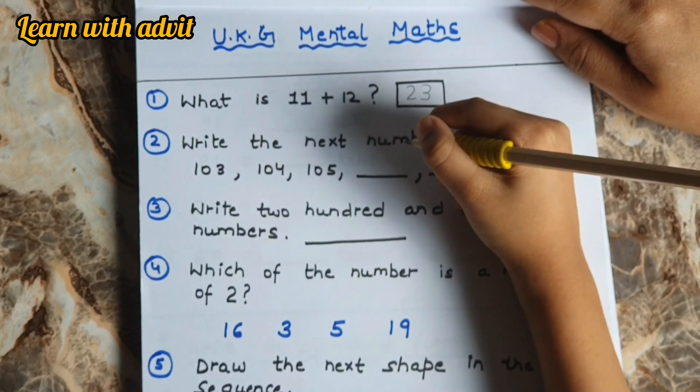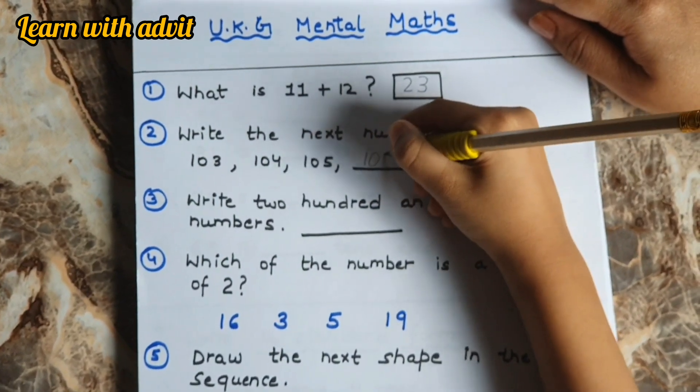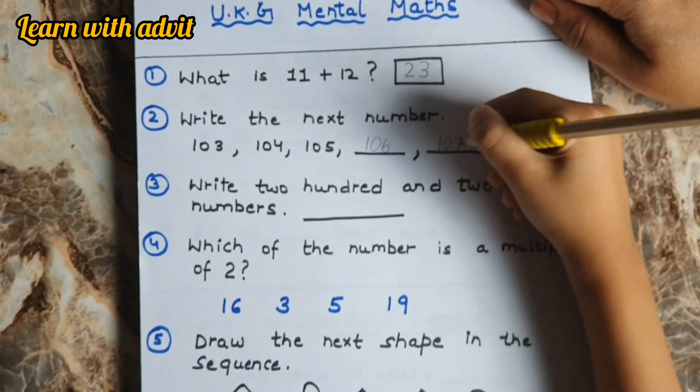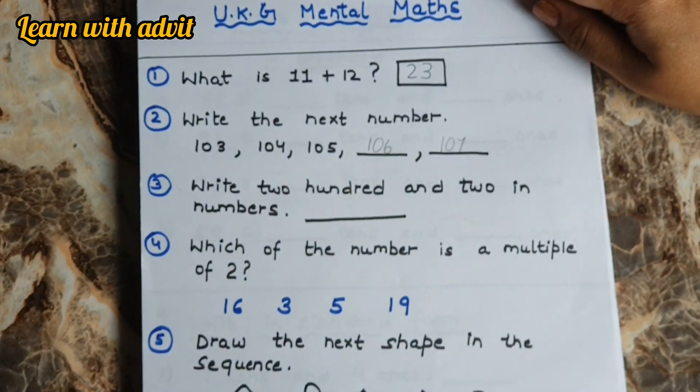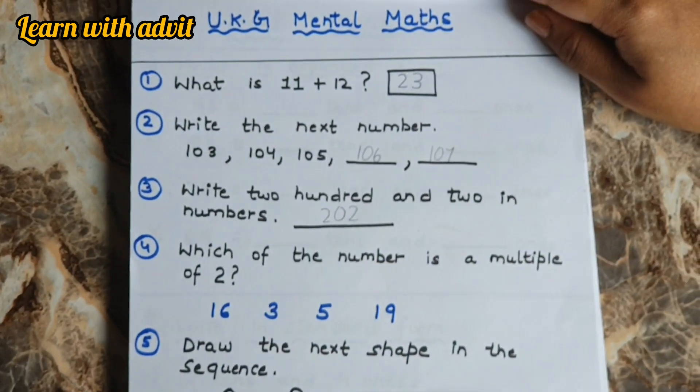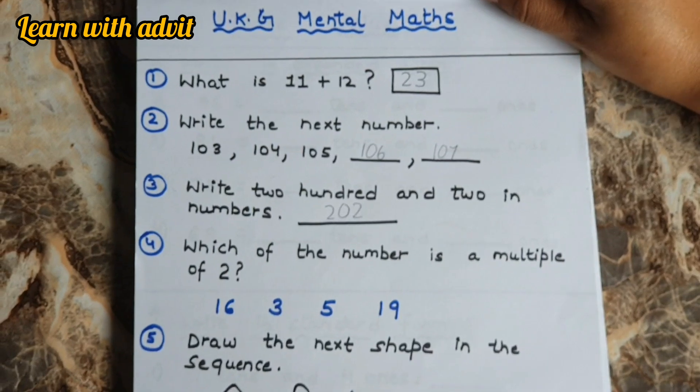Write the next number: 104, 105, 106. Yes, very good. Write 202 in numbers. 202, very good.